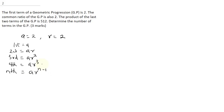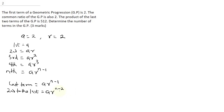It says the product of the last two terms of the GP is 512. The last term, or the Nth term, is AR to the power N minus 1. The second to last term will be AR to the power N minus 2, because there is always a decrease of 1 in the exponent. So we are going to multiply the second-to-last by the last: AR to the power N minus 1 times AR to the power N minus 2 equals 512.